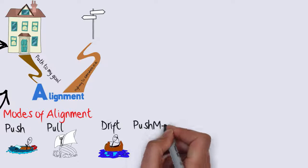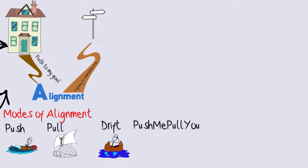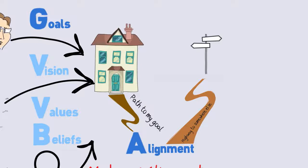The fourth mode is the push-me-pull-you mode. Like the mythical creature from Dr. Doolittle, this mode tries pushing in one direction while simultaneously being pulled in another. People in this mode of alignment are often paralyzed and are unable to make suitable choices to align themselves on the right path to achieve their own goal.